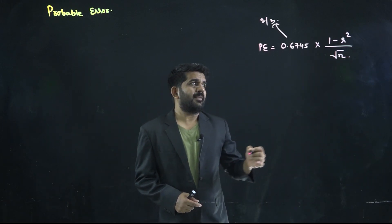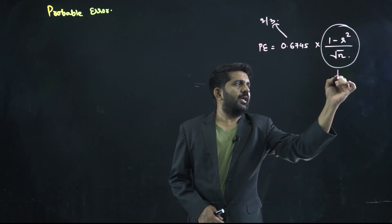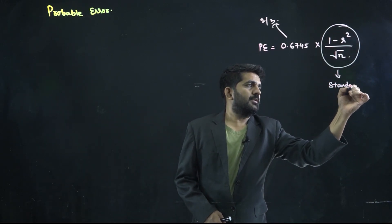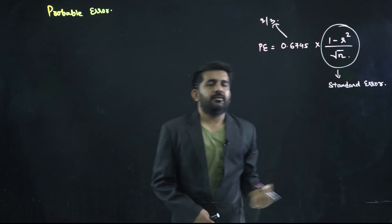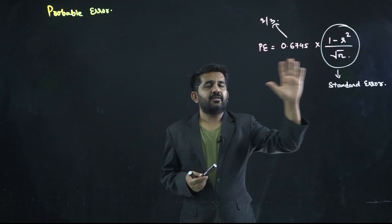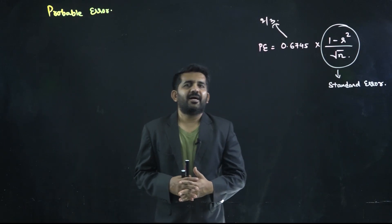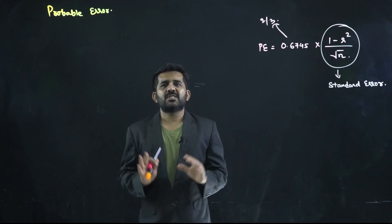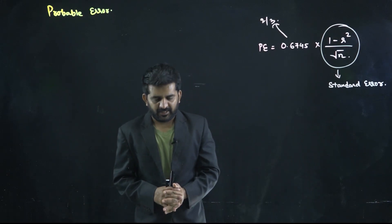Now, 1 minus r square upon under root n is nothing but standard error. So this is standard error, and this is probable error. You can memorize the formula and use it to solve MCQs on probable error.